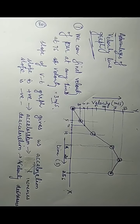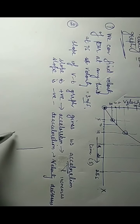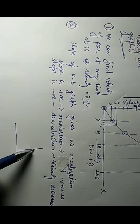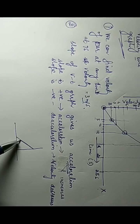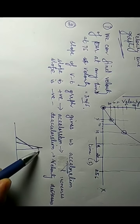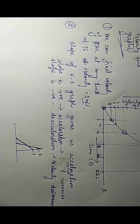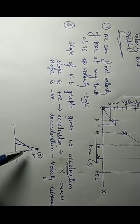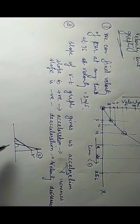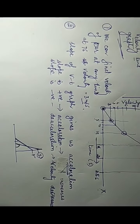Slope means slantness. Think of placing a ladder: in one position it is less slanted, in another it is more slanted. The angle determines the slantness — as the angle increases, the slantness also increases. The slope is basically this slantness.